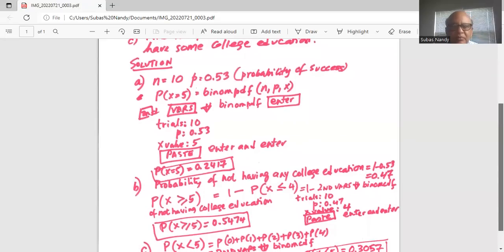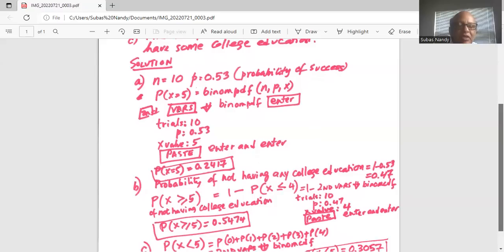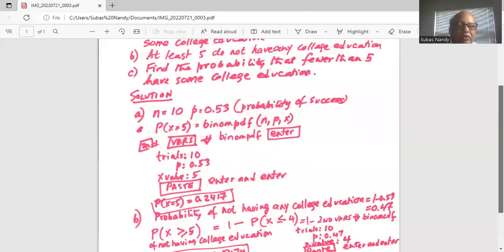CDF means cumulative. It will start from zero and go up to four. And then we go to paste, enter and enter. So probability of x greater than or equal to five is 0.5474, which is at least five do not have any college education out of 10.